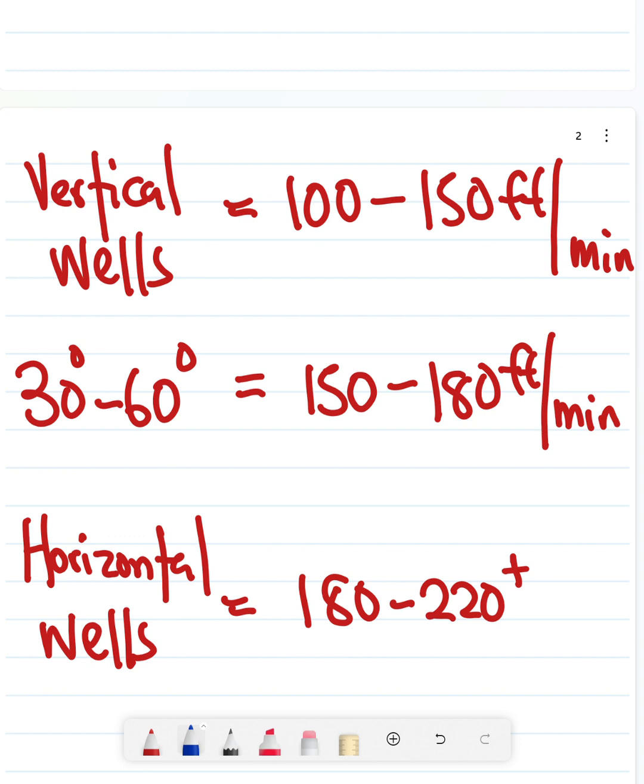But by the time you start moving from 30 degrees to horizontal wells, you see that the recommended annular velocity increases. This is because with high inclination in the wellbore, the propensity for cuttings to drop to the lower side is high.